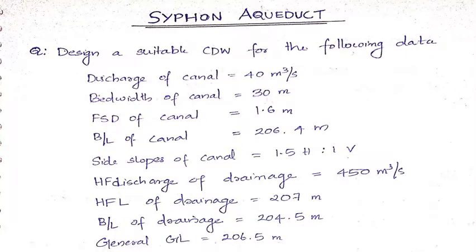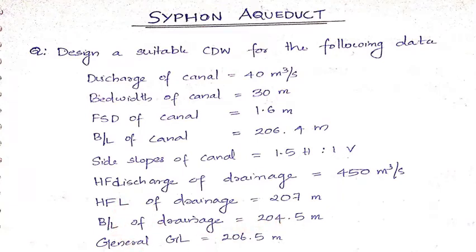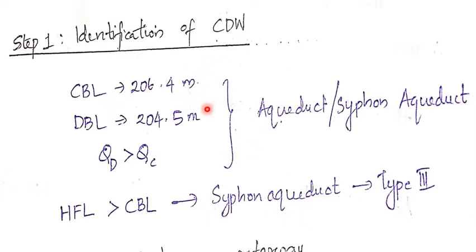The design question: design a suitable cross drainage work for the following data. Discharge of canal = 40 m³/s, bed width given, full supply depth = 1.6 m, bed level of canal = 206.4, side slope 1.5H:1V, high flood discharge of drainage = 450 m³/s, high flood level of drainage = 207, bed level of drainage = 204.5. Step 1 is identification: canal bed level 206.4 is above drainage bed level 204.5, so the work may be an aqueduct or siphon aqueduct. Since HFL (207) is greater than canal bed level (206.4), it is a siphon aqueduct of type 3.